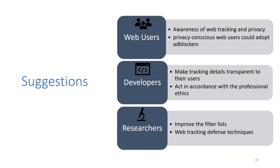From what we observed, we give some suggestions to different groups. For web users, the most important thing is to improve awareness of web tracking and user privacy, and we suggest using ad blockers to protect themselves from being tracked. For developers, we hope they can bring users data transparency and act in accordance with professional ethics such as respecting user privacy. For researchers, we expect improvement on filter lists — some people use machine learning to improve filter list performance — and we would also like to see web tracking defense techniques proposed to better protect web users.